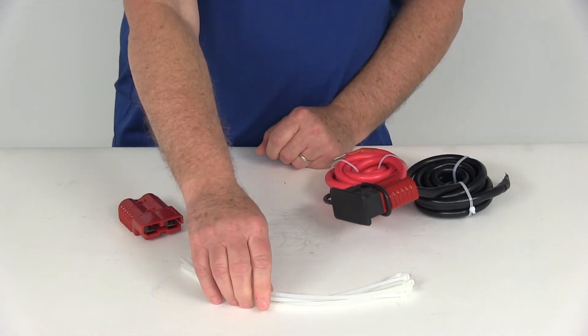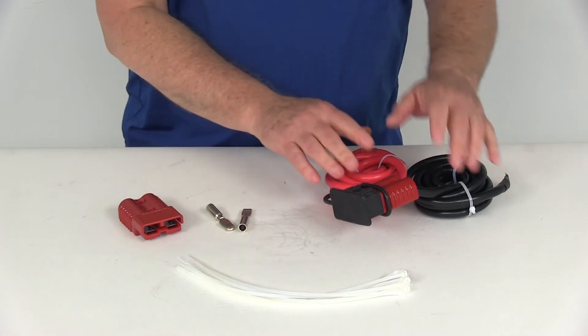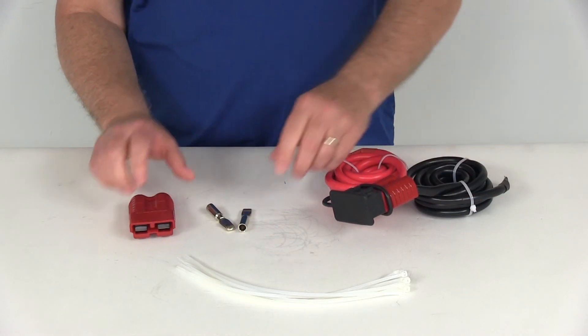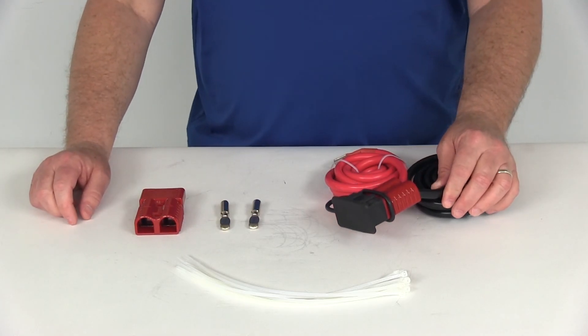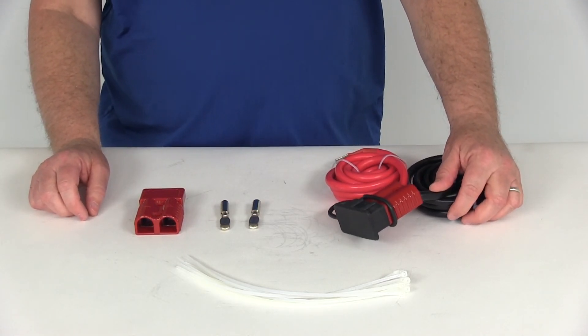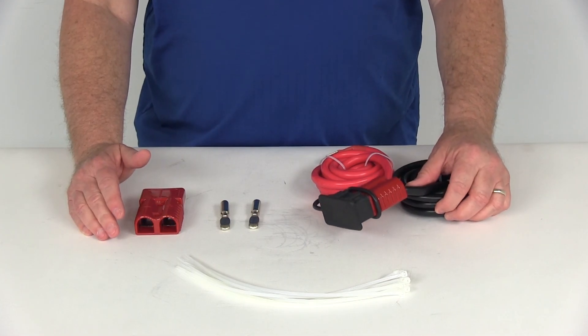It also comes with some extra cable ties to help secure any length of wire that might be hanging down. That should do it for the review on part number BDW20025, the Bulldog Fully Assembled Front Wiring Kit.